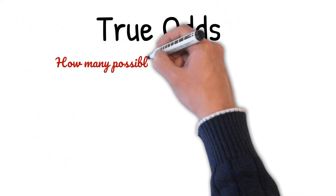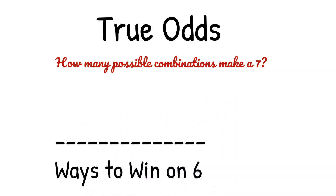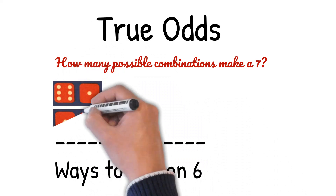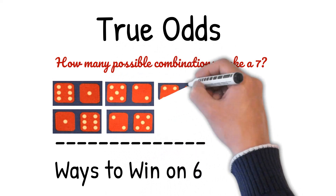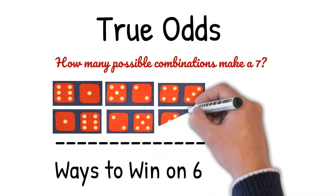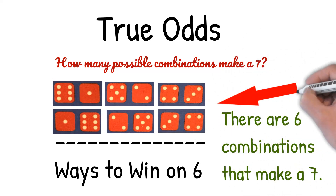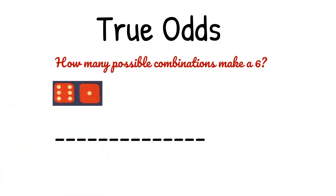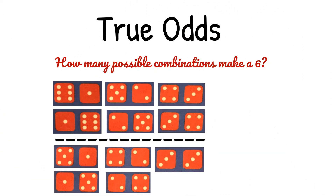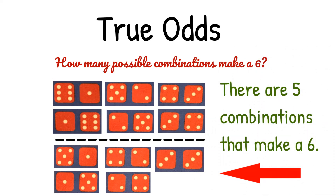How many possible combinations make a seven? There are six combinations that make a seven: 6-1, 1-6, 5-2, 2-5, 4-3, 3-4. How many possible combinations make a six? There are five combinations that make a six: 5-1, 1-5, 4-2, 2-4, and 3-3.